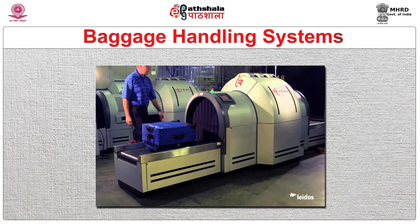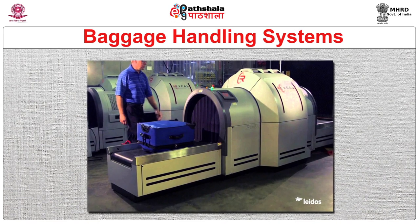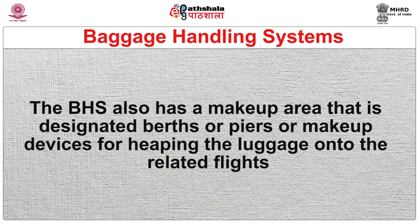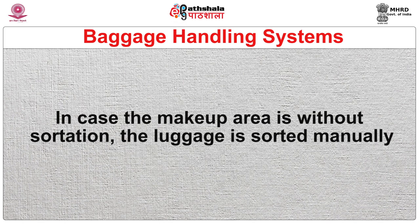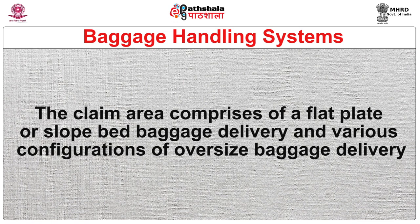The input areas to insert baggage into the baggage handling system are ticket counter areas, baggage check-in area, and any other conveyor lines. A programmed or electronic in-line baggage screening system widely used in air terminals is known as the screening area. These programmed baggage screening systems comprise explosive detection systems (EDS) units. The BHS also has a makeup area designated for heaping luggage onto the related flight. If the makeup area is without sortation, the luggage is sorted manually. The claim area comprises flat plate or slope and baggage delivery configurations, including oversized baggage delivery.